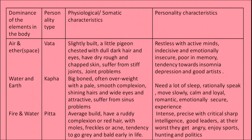The second type is when there is water and earth. The personality type is Kapha. They have characteristics like big-boned, overweight, with a pale smooth complexion, shining hair, wide eyes, and they are attractive. They suffer from sinus problems, need a lot of sleep, speak slowly, move slowly, and are calm and loyal, romantic and emotionally secure.